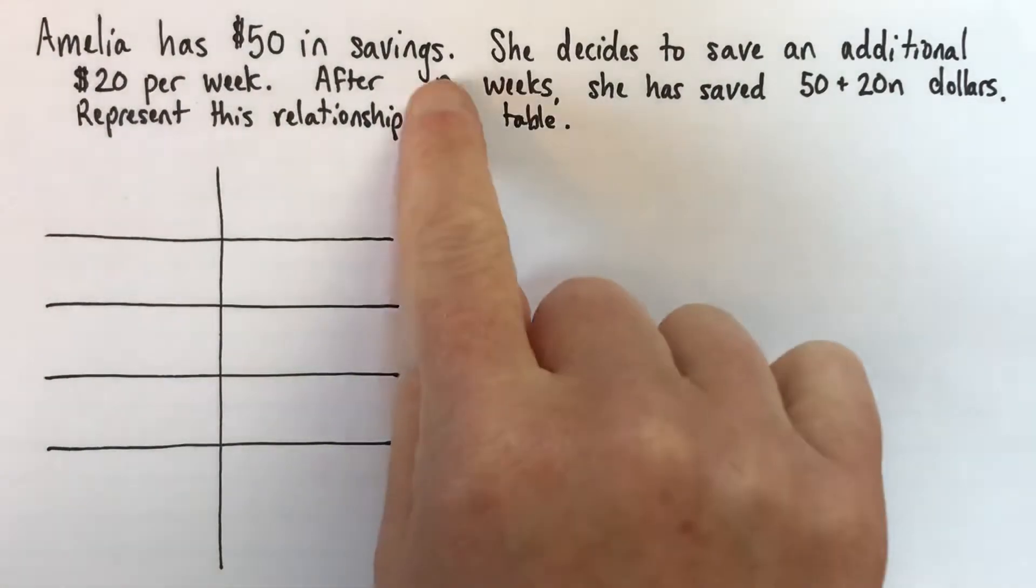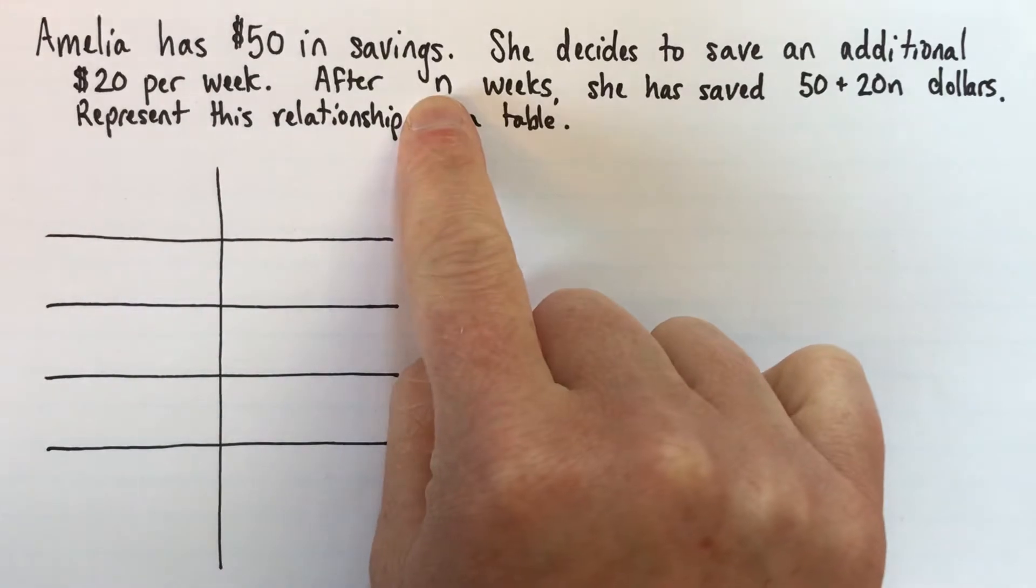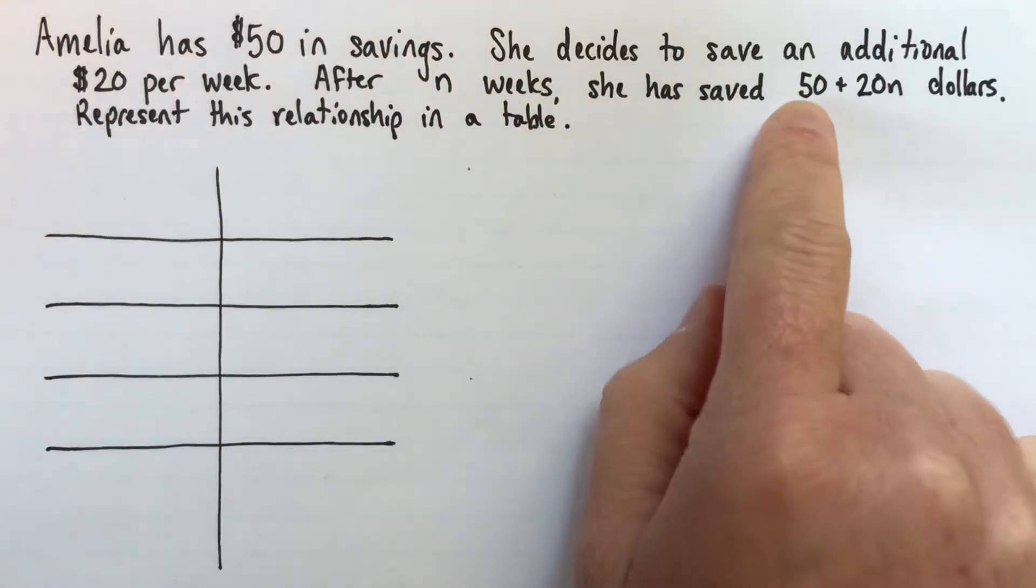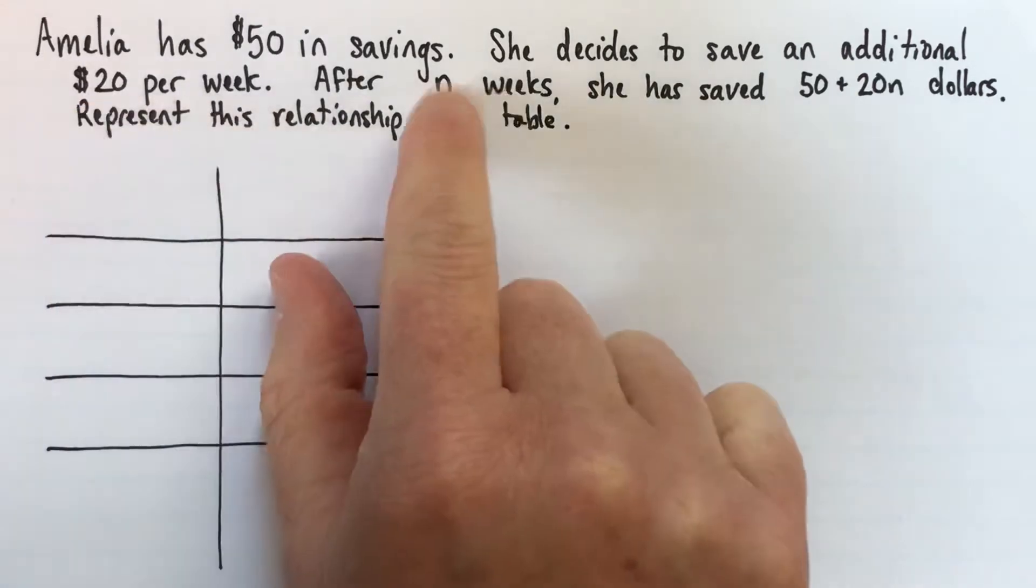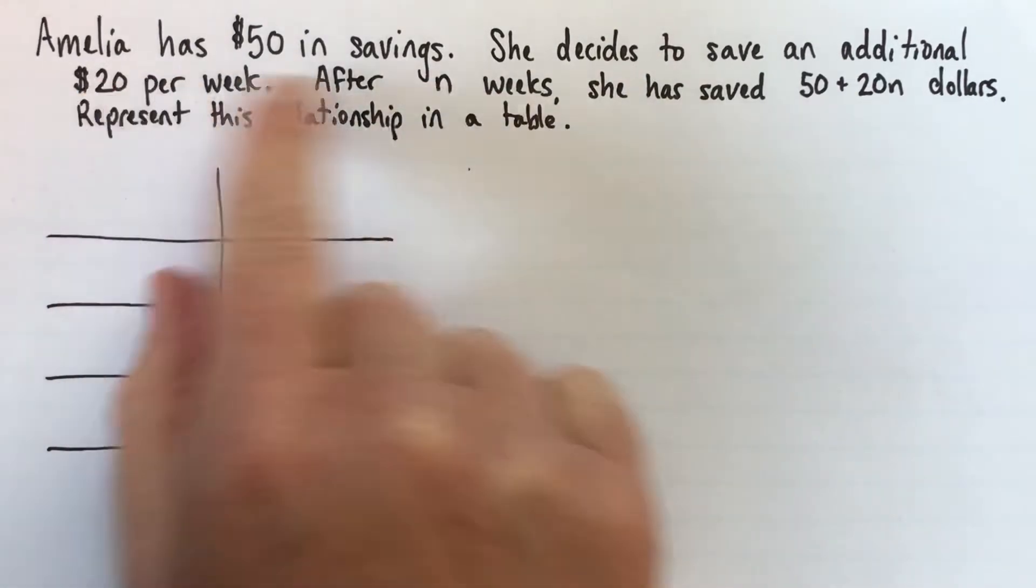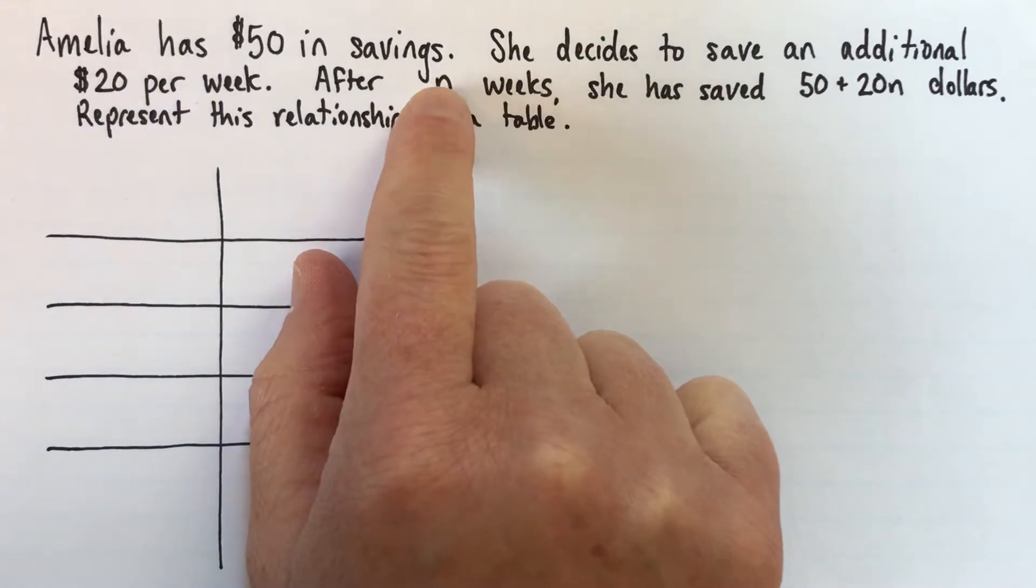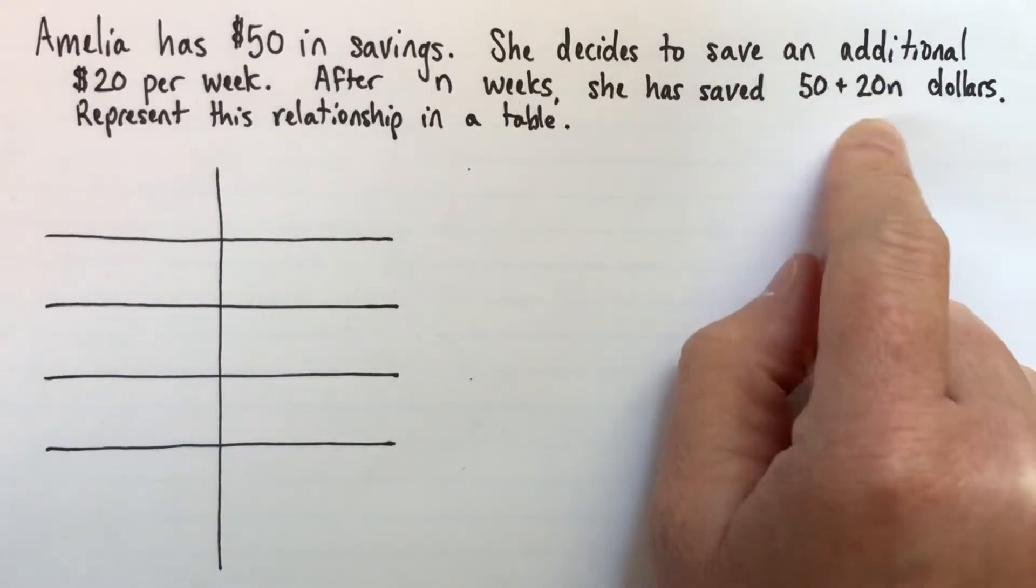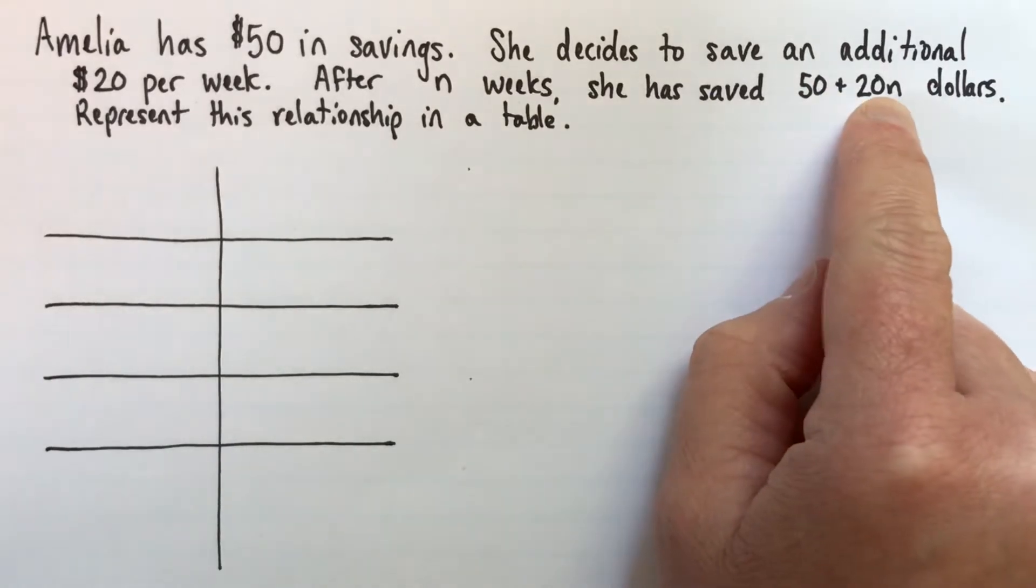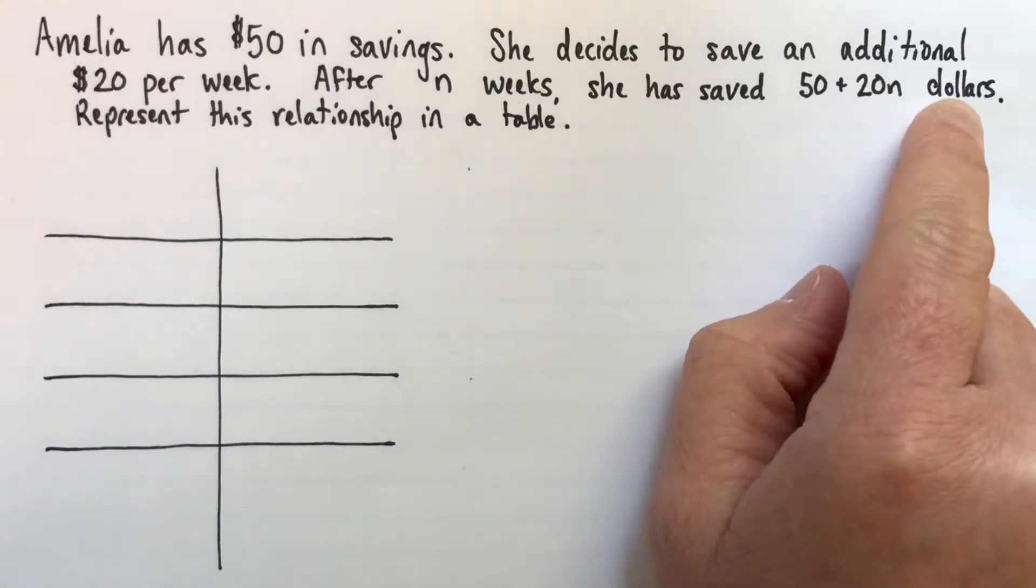So after n weeks, if you think how much has she got after n weeks, well she had $50 to start off with, and then you could multiply $20 by however many weeks it was. So if it was 8 weeks, you could do 20 times 8 is 160, and then add that to 50. So this relationship, 50 plus 20 times n, that represents how many dollars she has saved.